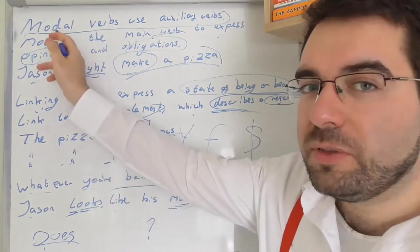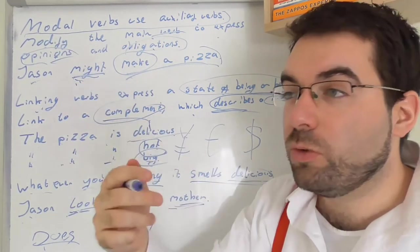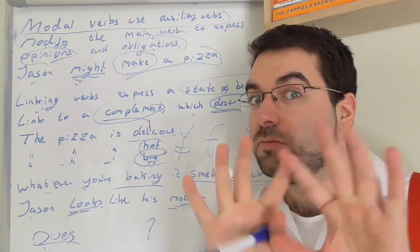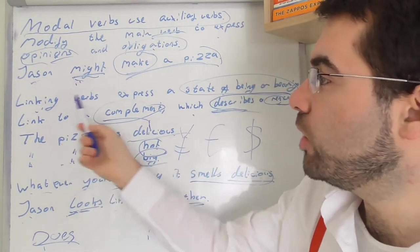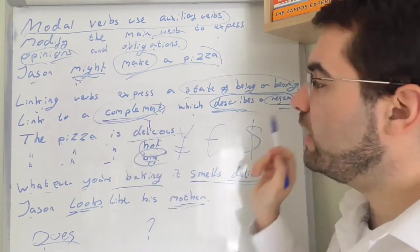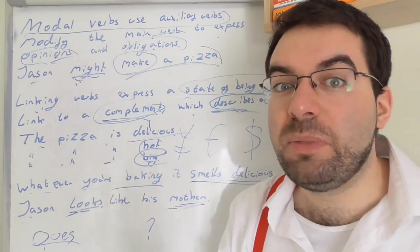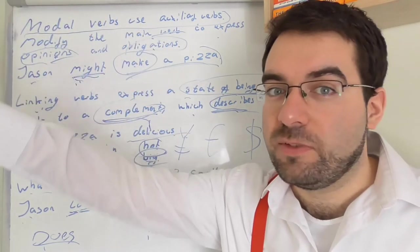So modal verbs express opinions or obligations. Maybe, might, should, could, would, must, shouldn't, couldn't, wouldn't. Linking verbs express a state of being. Like, linked to a compliment, describes or renames. The pizza is delicious, the most hot pizza in, the biggest pizza in town. Yeah, cool. Let's keep going.